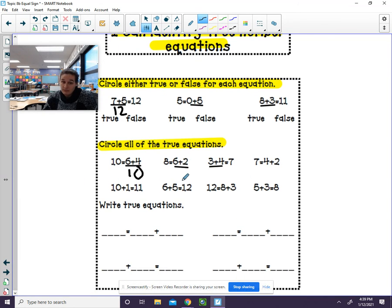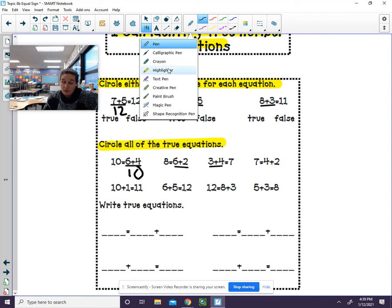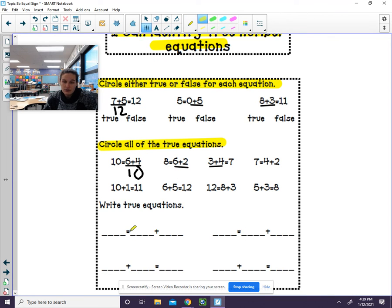The last part, got to be very careful with this. I am going to highlight it to show you, to notice. Notice where that equal sign is. You need to write true equations. You have to make sure that you put it in the correct order. So I will do one for you. Notice I'm going to put a, I think I might do the plus side first actually. Just because once I add these, then I'll know what goes here. So I'm going to do two plus three.